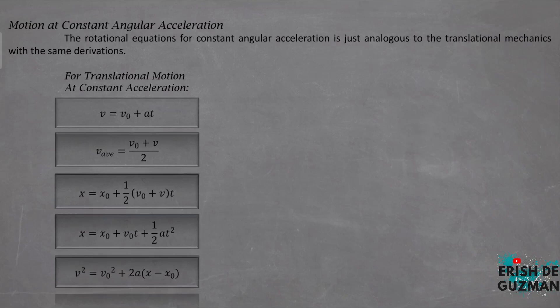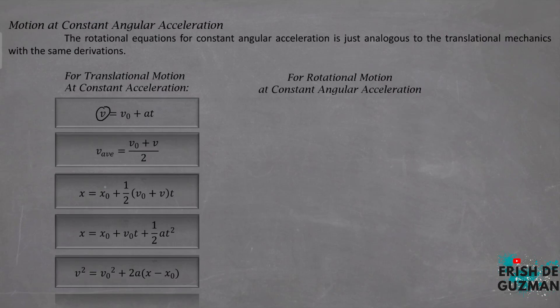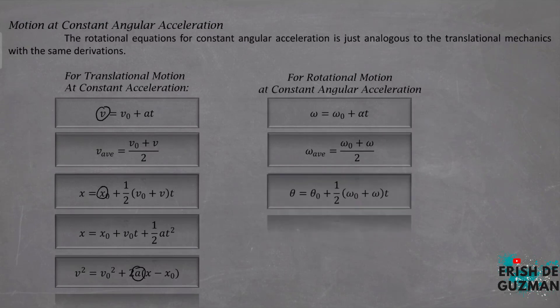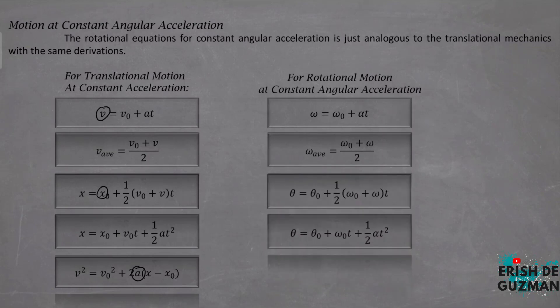And for its counterpart sa rotational motion, for rotational motion at constant angular acceleration, papalitan lang natin yung mga variables like v, x, and acceleration. For the first equation, pinalitan natin ng omega and alpha; second equation, third equation, fourth equation, and the fifth equation. So mapapansin natin that every term in a given linear equation has a corresponding term in the analogous rotational equation.